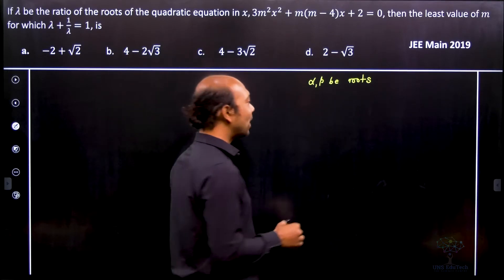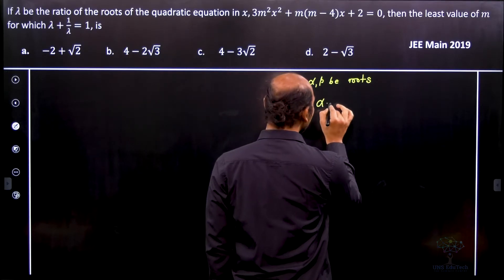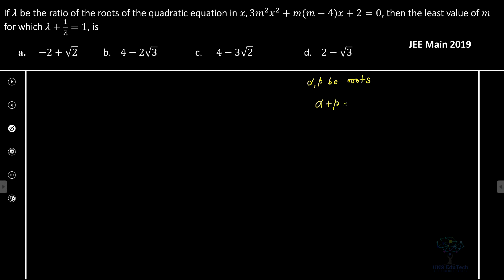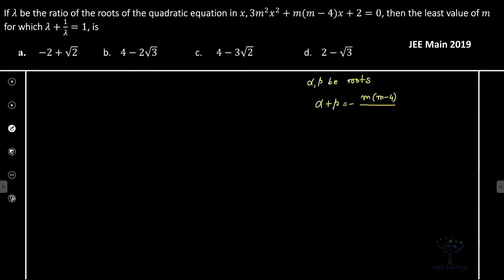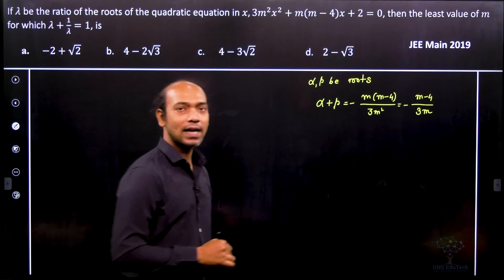So what is alpha plus beta? The sum of the roots is equal to minus b by a. So therefore it will be minus of m into m minus 4 — that's b in this case. If I compare with ax² + bx + c = 0, here it is 3m², that is a. So that gives minus (m minus 4) divided by 3m. That's my sum of the roots.